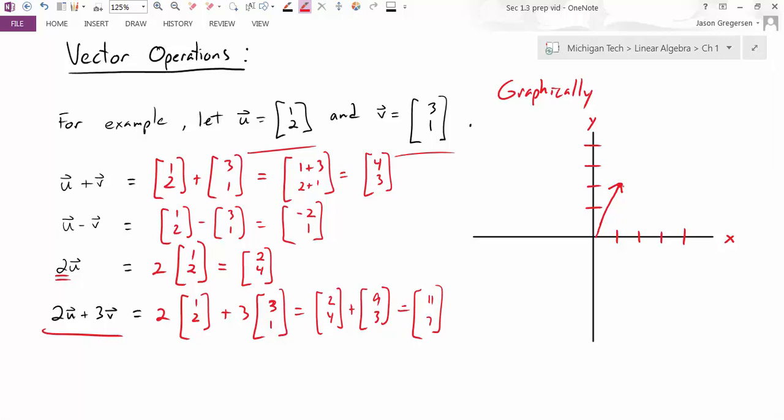And so I can see that the set of all lists of two numbers is the same as the set of all points in the two-dimensional coordinate system. So that would be the visual representation of the vector 1, 2. To represent the vector 3, 1, I go over 2, 3, 1, and draw that arrow.